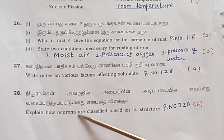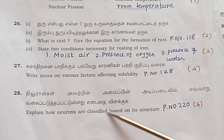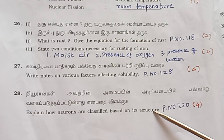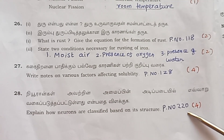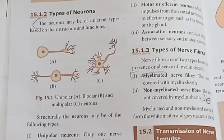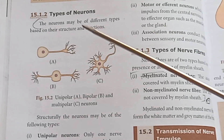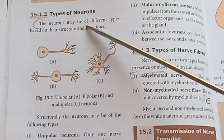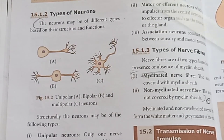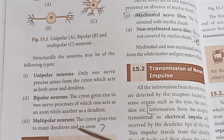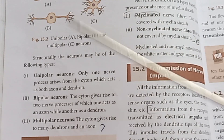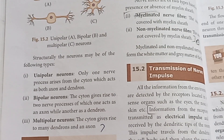Question 28: Explain how neurons are classified based on their structure. Page number 220. Types of neurons include multipolar neurons, which have dendrites and an axon.